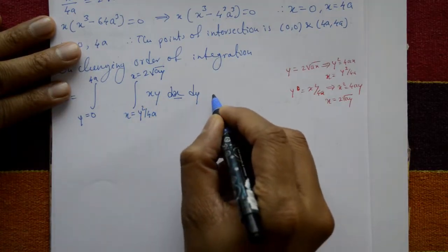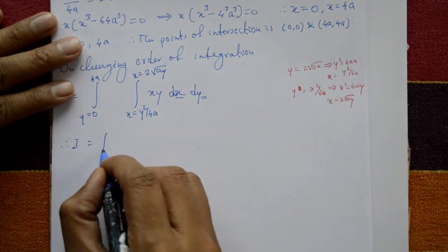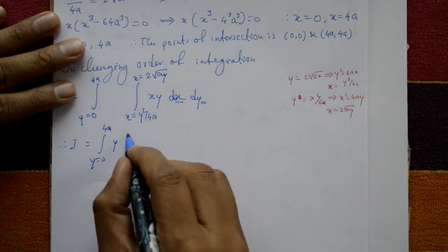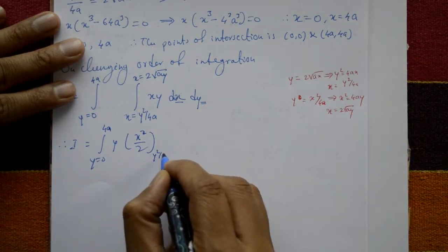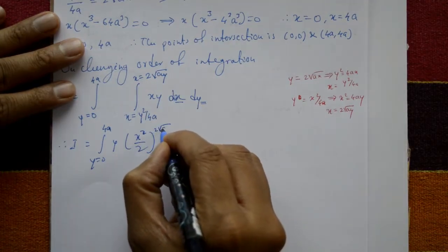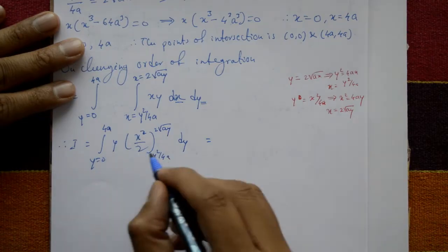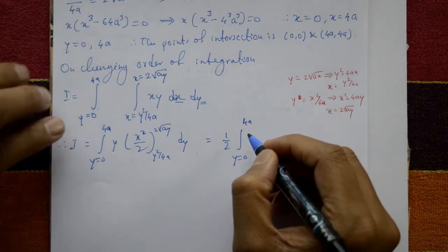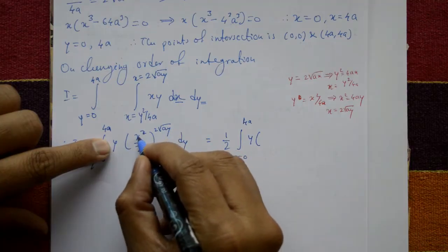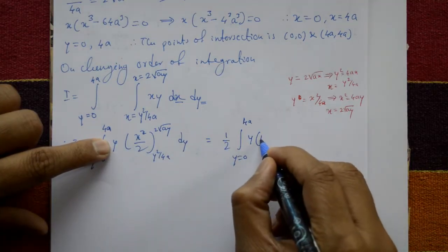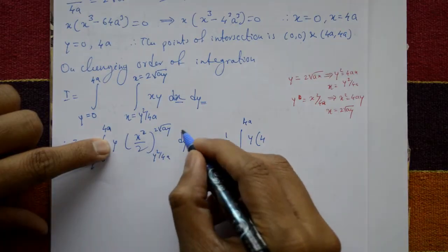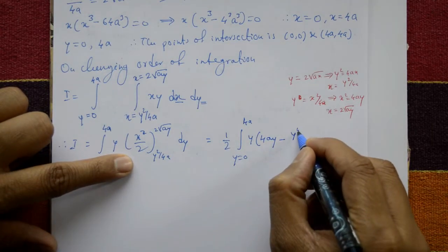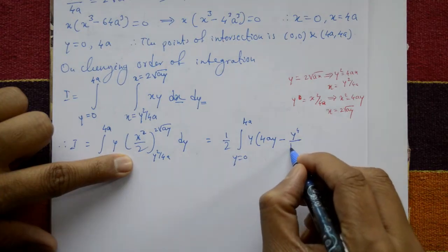Therefore I equals integration from y equals 0 to 4a of y times the integral of x from y squared by 4a to 2 times square root of ay, giving x squared by 2 evaluated at those limits. This equals one-half times integration from 0 to 4a of y times [4ay minus y to the 4 divided by 16a squared] dy.